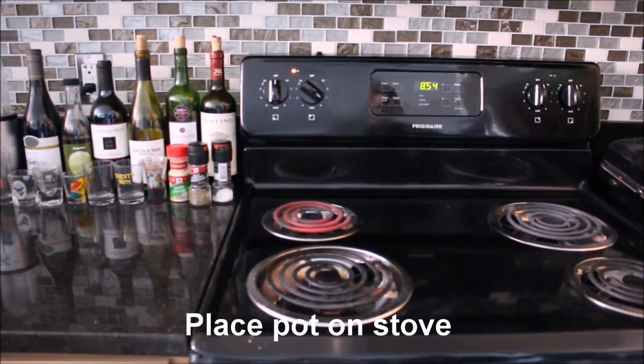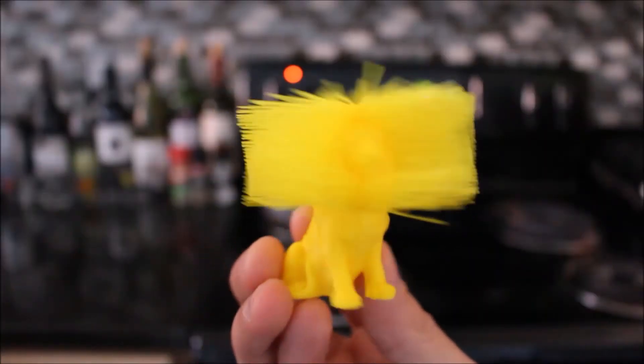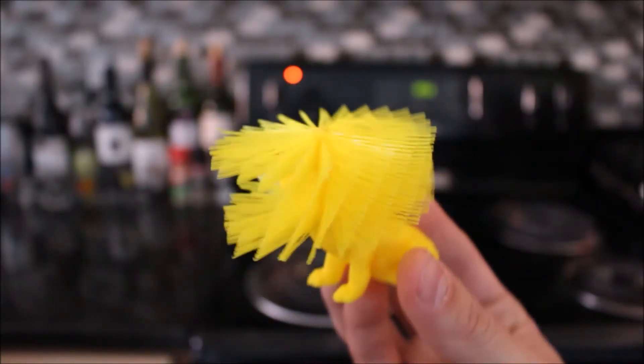Once your stove is red hot place the pot on the range and let it get to a low boil. You are now ready for the dipping process.